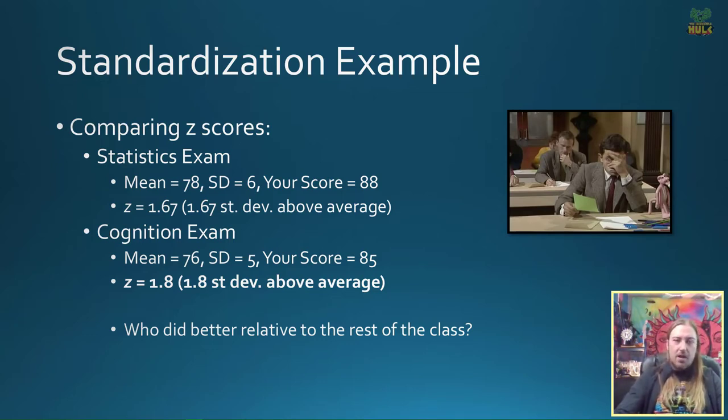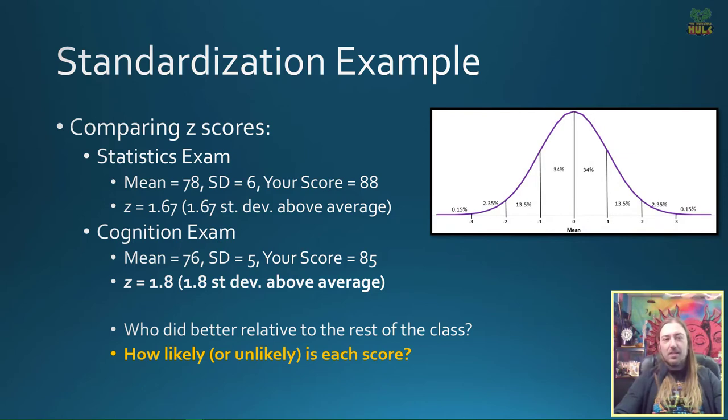If we do the same thing for the cognition exam and plug in those values, you get a z-score of 1.8. Which one's higher above? Well, you don't even need the normal distribution to realize that 1.8 is higher than 1.67, which means it has a higher percentile, which means it's scoring at or above a larger portion of that distribution. So while the raw score itself is three points lower, the position in the class is considerably better for the cognition exam than it is for the stats exam.